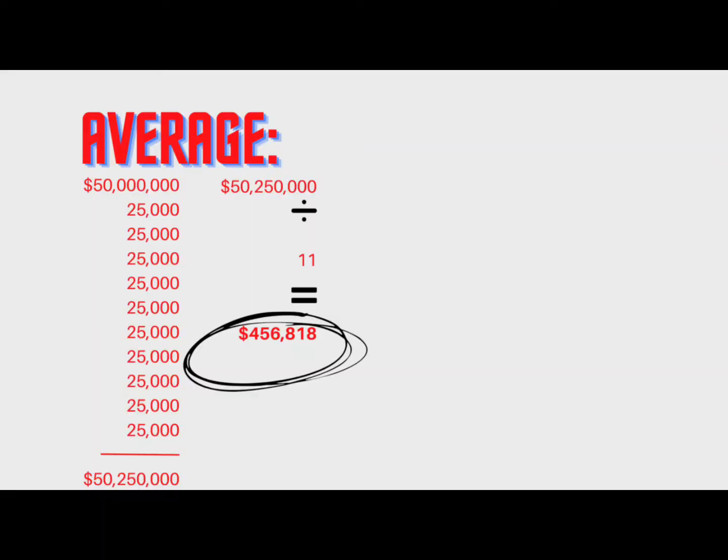If you remember back to math class, the way you calculate average is you add up all of the values. In this case we've got 11 homes — you add up all the values and divide, and that's your average. So we add 50 million dollars plus $25,000, $25,000, and so on, divide it by 11, and you get the average home price in this town of $456,000. But can you actually buy something for $456,000 in this town? You can't.